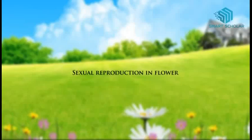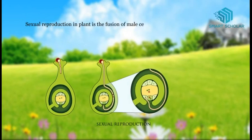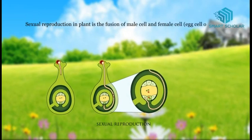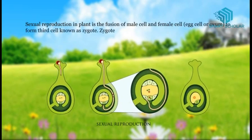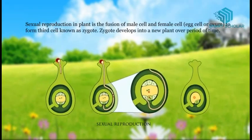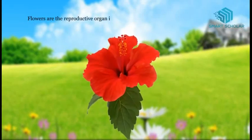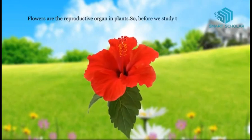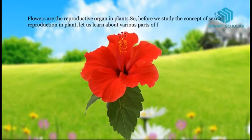Sexual Reproduction in Flowers. Sexual reproduction in plants is the fusion of a male cell and a female cell to form a third cell known as a zygote. The zygote develops into a new plant over a period of time. Flowers are the reproductive organs in plants. Before we study the concept of sexual reproduction in plants, let us learn about the various parts of a flower.